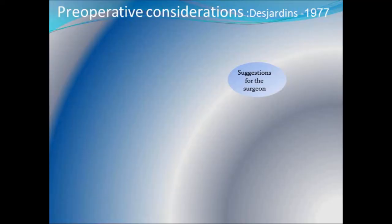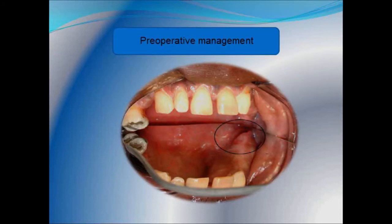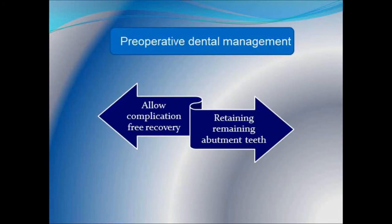Let us see the pre-operative considerations during prosthetic rehabilitation. According to Desjardins in 1977, a prosthodontist is concerned with four objectives: psychological management of the patient, pre-operative dental management, pre-operative impressions, and surgical enhancement and suggestions for the surgeon. The prosthodontist should give psychological support to the patient. Under pre-operative management, every attempt should be made to treat existing dental issues prior to surgery — all prophylaxis should be done and all carious teeth need to be restored. This allows complication-free recovery, ensures no emergency dental issues during the post-surgery healing period, and helps retain the remaining abutment teeth.